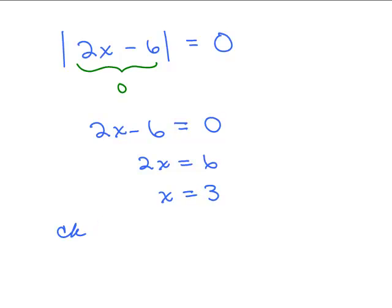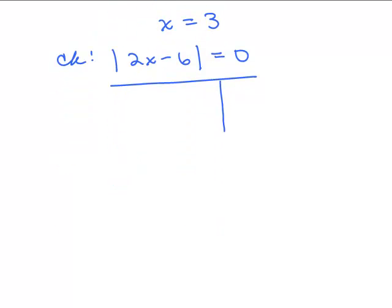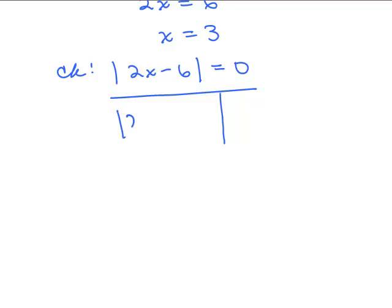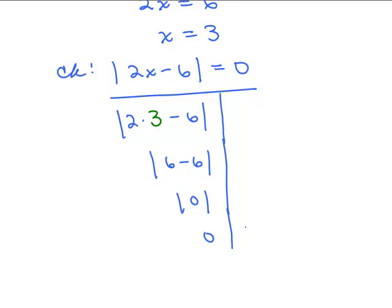That's easy to check. Let's go ahead and check it. We take the original problem and plug in x equals 3: we have the absolute value of 2 times 3 minus 6. Simplifying inside the absolute value gives 0, and the absolute value of 0 is 0. We've got 0 on the other side. So for this problem, x equals 3 is the solution.